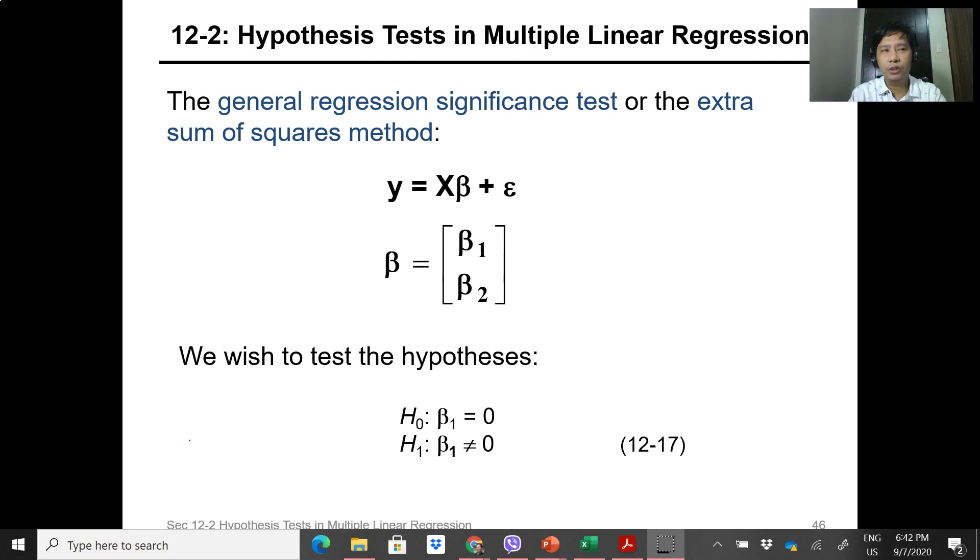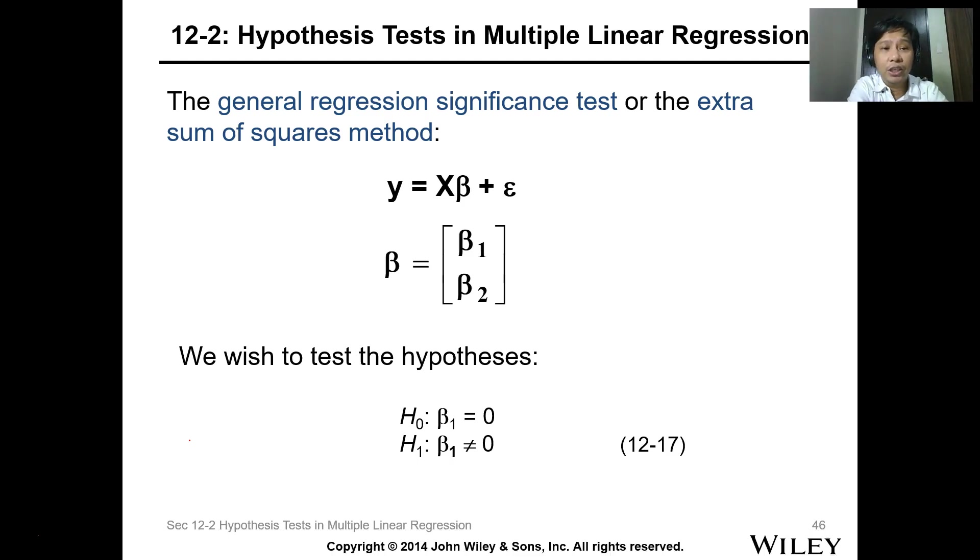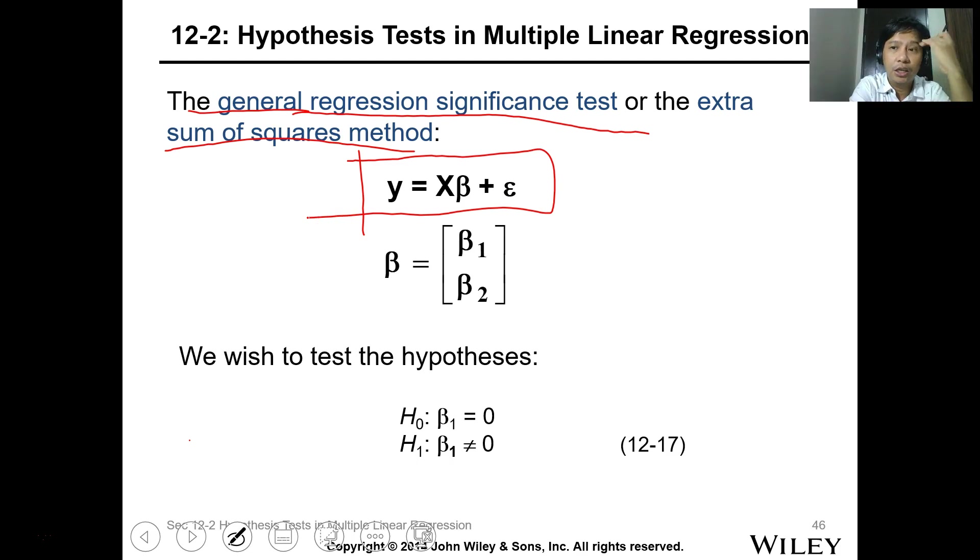So how do we do hypothesis testing for the coefficient? The general regression significant test or the extra sum of squares method utilizes the matrix methodology. You have the function y equals Xβ plus the error.